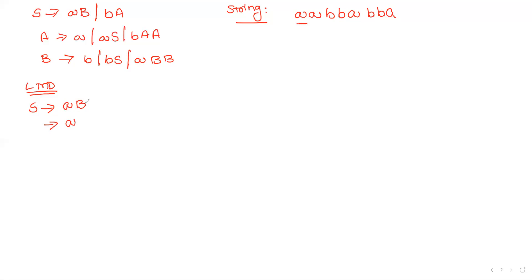Now we have only one non-terminal to replace — capital B — but we must check which production fits. From B we have three productions. The second character of our string is 'a', so we select the production for B that starts with 'a'. Capital B is replaced accordingly. Now two 'a's have occurred and we continue the leftmost derivation.